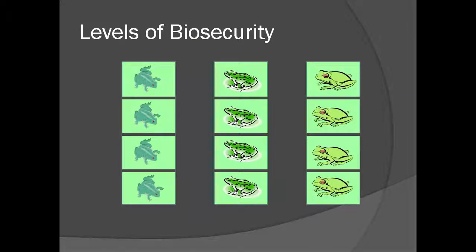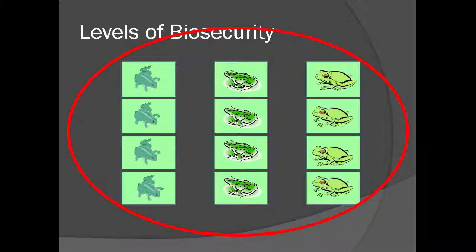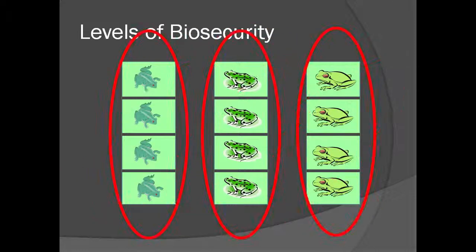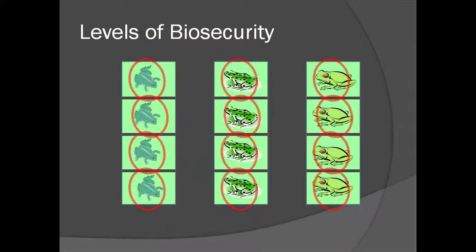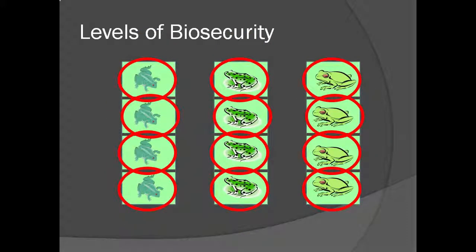There are many different levels of biosecurity, and you can develop your system to suit your needs. The level of attention depends on your level of risk. For example, if all enclosures house long-term captives of common species, the room may be treated as one unit using all the same utensils. In another scenario, different species from different geographic locations may warrant treating each row as a separate unit with its own set of tools. Or each enclosure can be treated as a separate unit. Try to prevent potential spread of disease as much as possible in your facility.